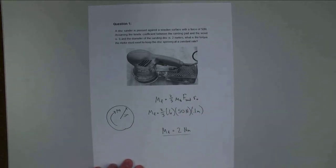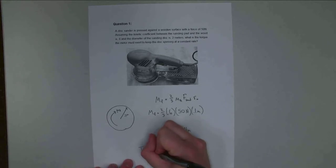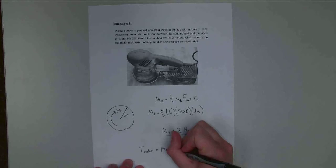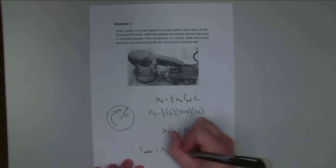And the moment that the motor needs to exert, to keep it at a constant rate, needs to be equal and opposite. So T motor is also going to be equal to the moment due to friction, which is equal to 2 newton meters.